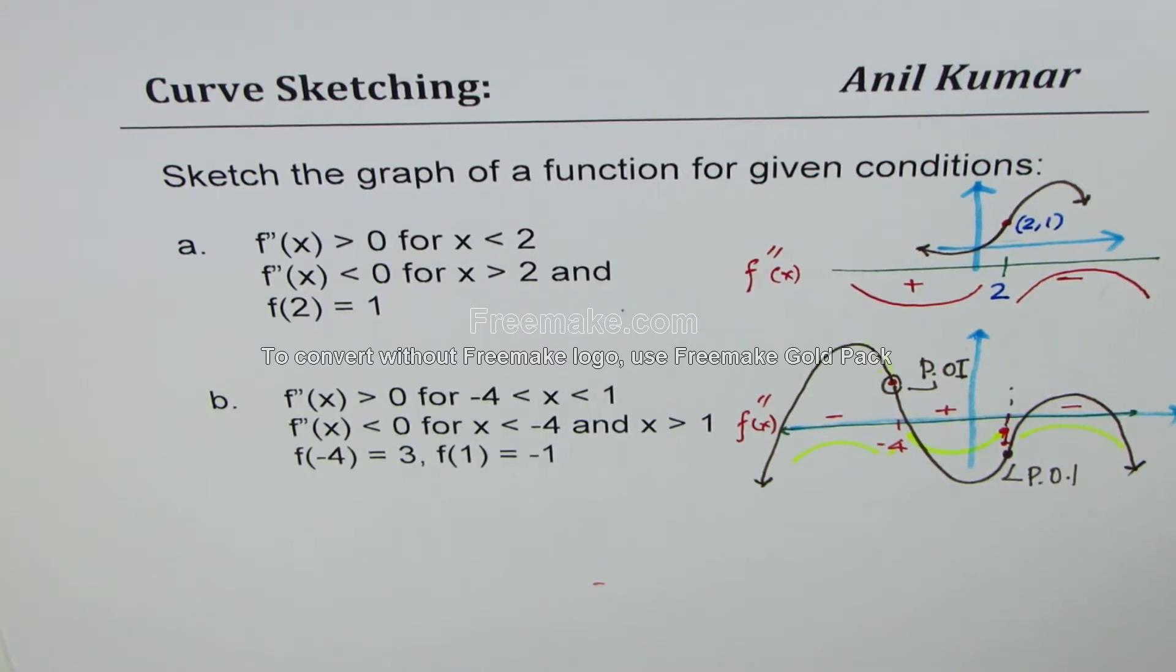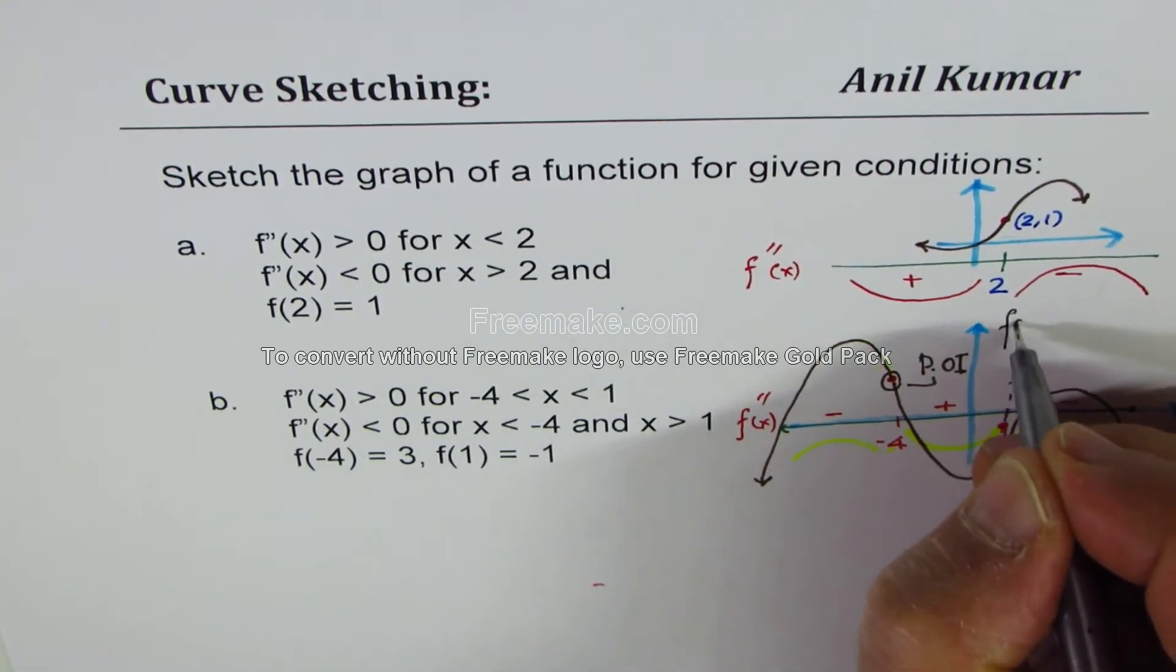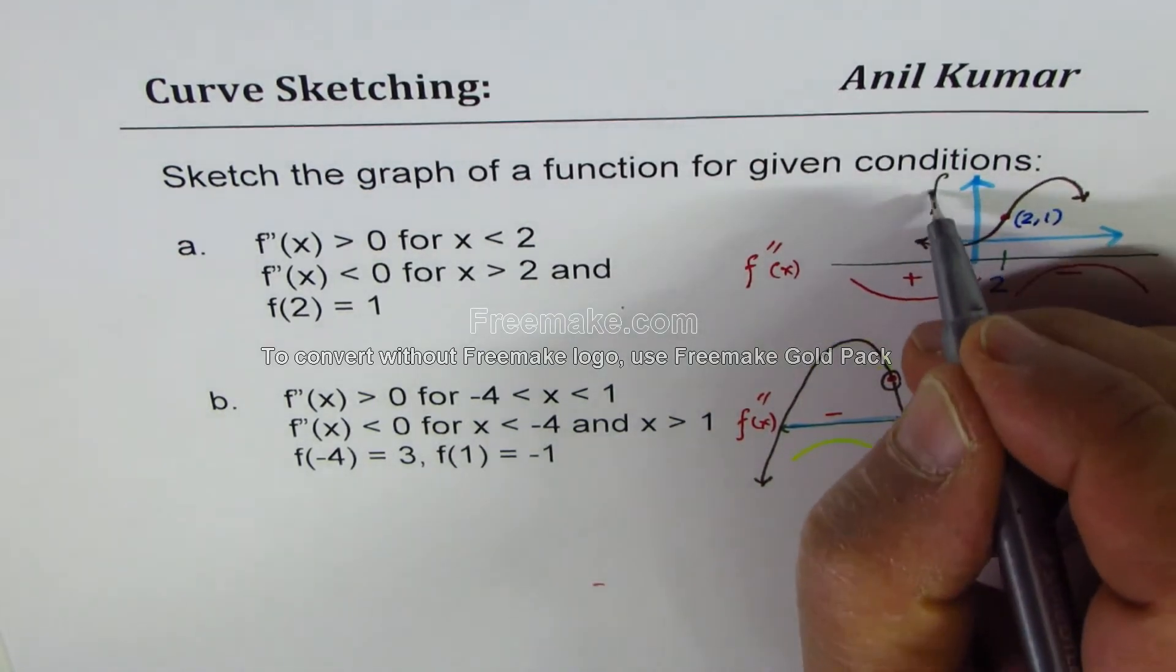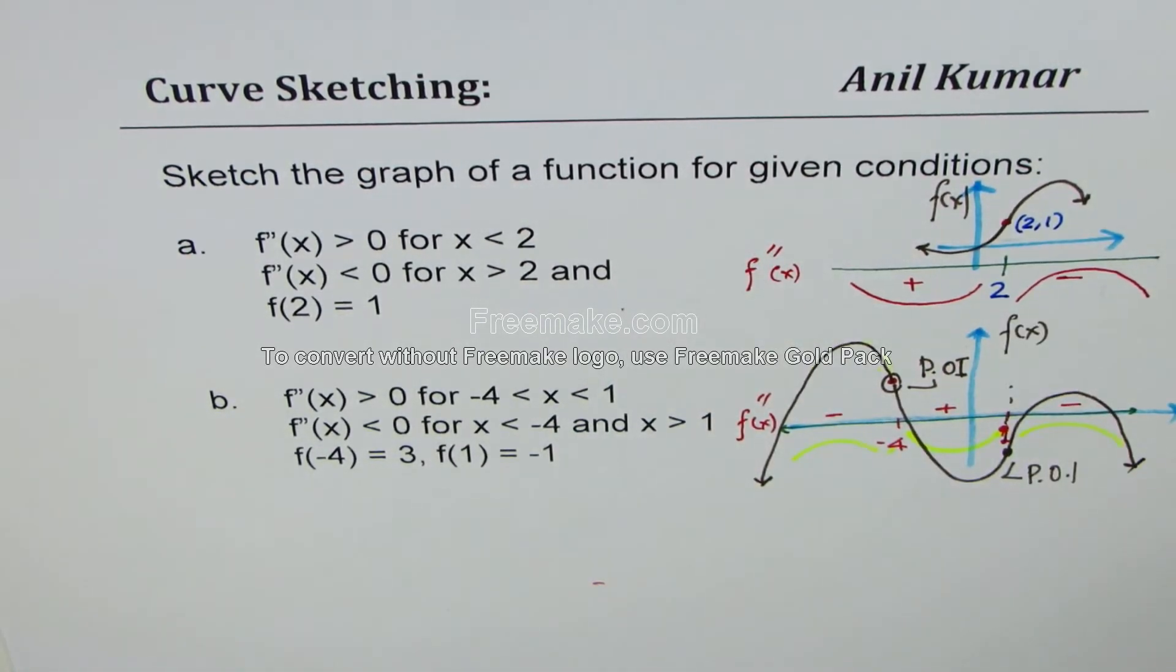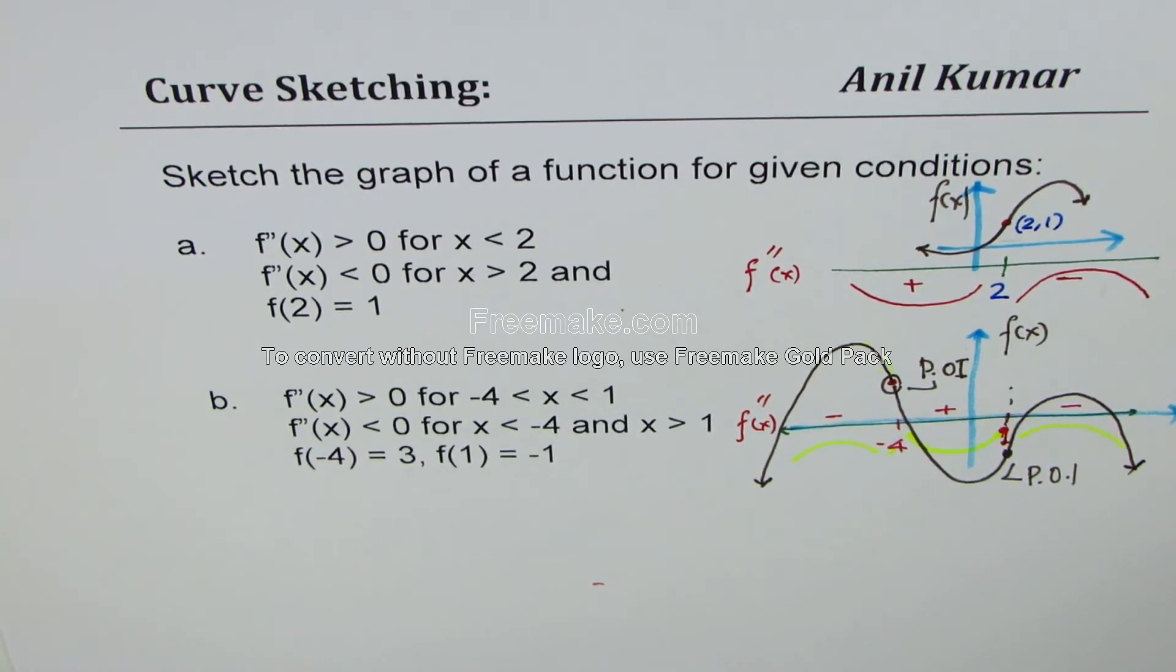So I hope with this, you understand how to utilize second derivative information to sketch fairly accurate graph of the function itself. So we sketch function by analyzing the given points and intervals when the second derivative was positive or negative.